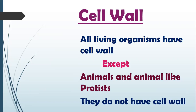If the plant-like protists are like plants, then plant-like protists would have a cell wall. If the fungus-like protists are like fungi, then fungus-like protists would have a cell wall. If the animal-like protists are like animals, then animal-like protists would not have a cell wall. So the exception is: all organisms in the world have a cell wall except animals and animal-like protists.